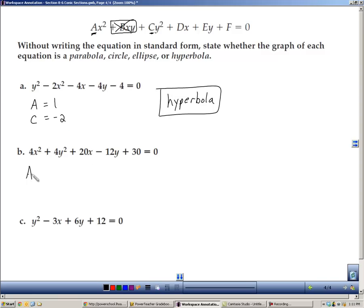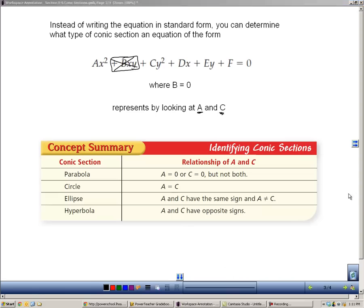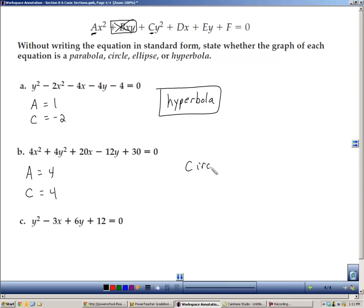In b, we see our A is 4, and our C is 4. So if we go back to the concept summary, A equals C, we know that this equation is the equation of a circle.